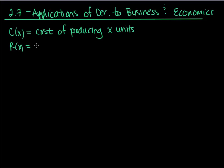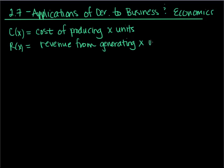The next function is revenue — revenue from generating x units. Revenue is just the amount of money that I actually bring in. That's not our profit, because revenue doesn't consider costs. So that brings us to our next function, which is the profit function.